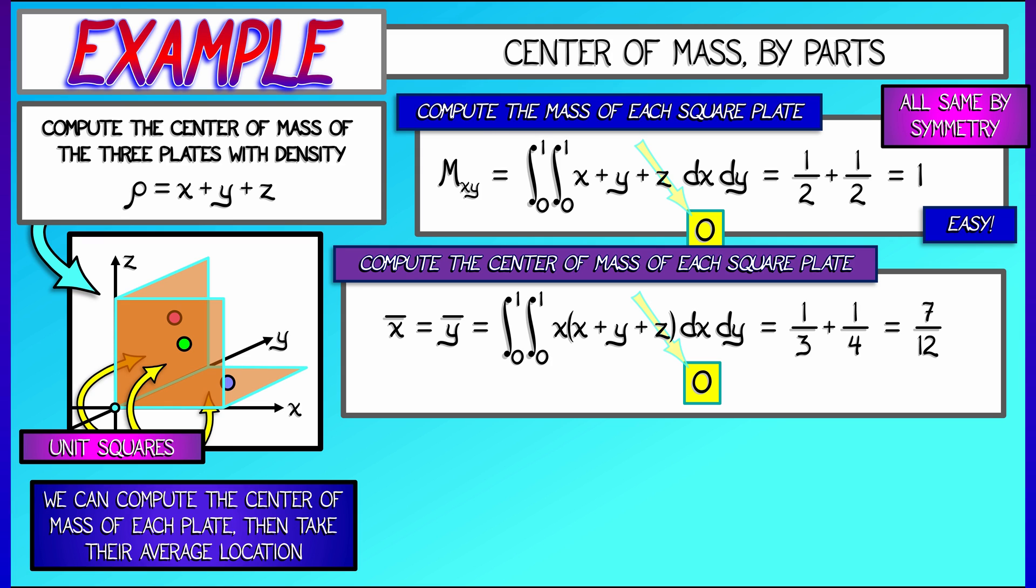That means that each square plate has center of mass at seven twelfths, seven twelfths, and zero, where for the different plates, I'm permuting the coordinates. So for example, in the xy plate, z-bar is equal to zero, and x-bar and y-bar are seven twelfths.